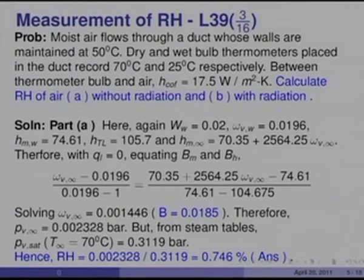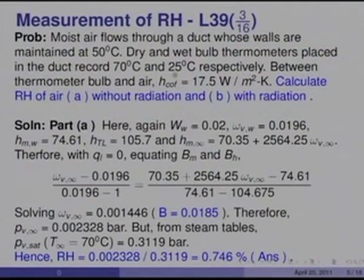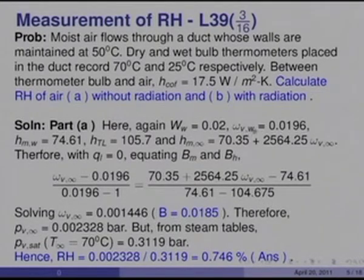In part A, we assume the thermometer readings are correct and uninfluenced by radiation. Corresponding to 25°C, we get w_w (specific humidity) as 0.02, so the mass fraction at the wet bulb surface is omega_V_w = 0.0196, giving mixture enthalpy H_m_w = 74.61.